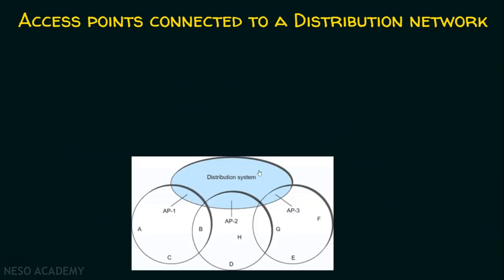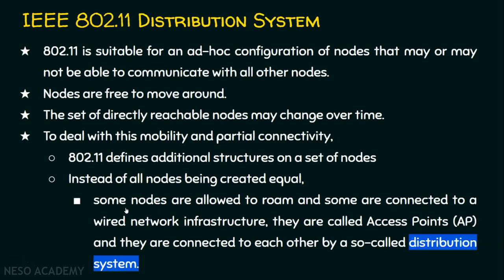Looking at the diagram, nodes A, B, C, D, H, G, E, F are mobile nodes that can move around. Access point 1, access point 2, and access point 3 are fixed and connected to the background distribution system via a wired network infrastructure. At the background we have a wired infrastructure, while the mobile nodes are wireless. These access points are connected to a so-called distribution system. Some nodes are allowed to roam, some are connected to the wired network infrastructure as access points, and these access points are connected to each other by the distribution system.